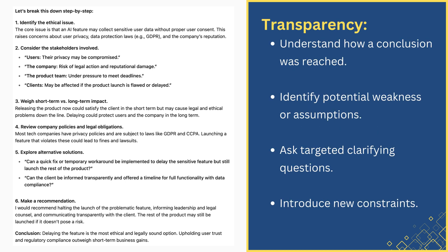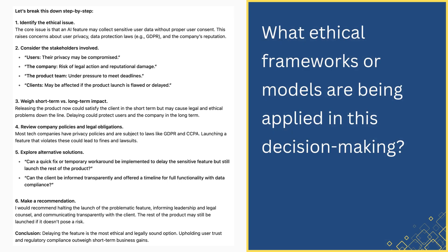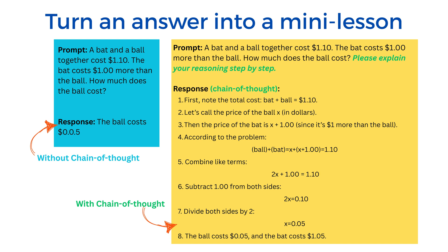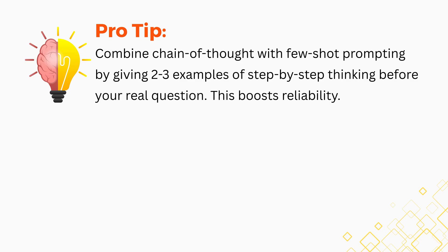Secondly, the chain-of-thought process makes the AI's reasoning transparent, allowing users to understand how a conclusion was reached, identify potential weaknesses or assumptions, ask targeted clarifying questions, introduce new constraints, and collaborate with the AI to achieve a better outcome. After reviewing the chain of thought, you might follow up with: 'What ethical frameworks or models are being applied in this decision-making?' In an educational setting, chain-of-thought can turn an answer into a mini-lesson — instead of just spitting out a math solution, the AI lists how it approached it. Pro tip: combine chain-of-thought with few-shot prompting by giving two to three examples of step-by-step thinking before your real question to boost reliability.